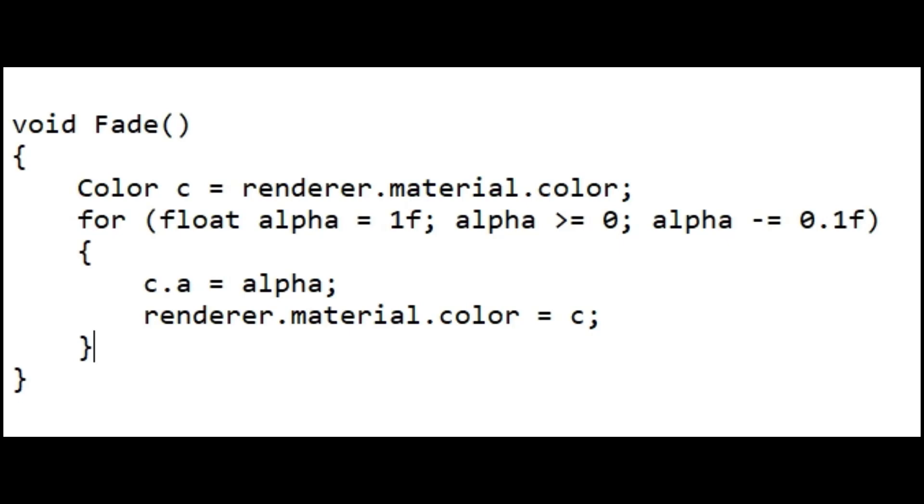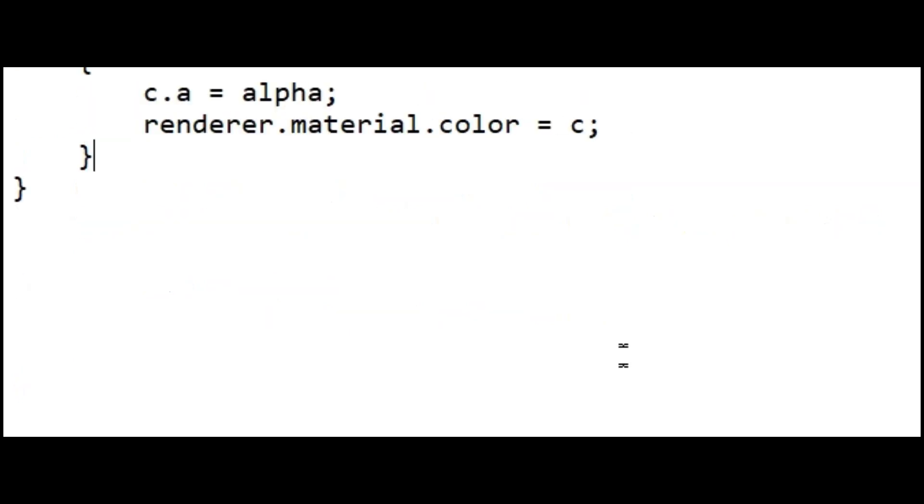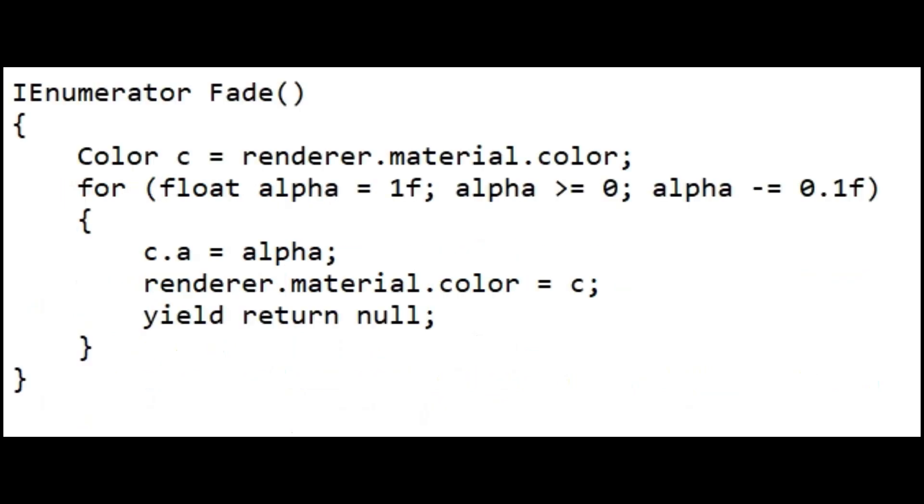To work around this situation, you could add code to the update function that executes the fade on a frame-by-frame basis. However, it can be more convenient to use a coroutine for this kind of task. In C Sharp, you declare a coroutine like this.